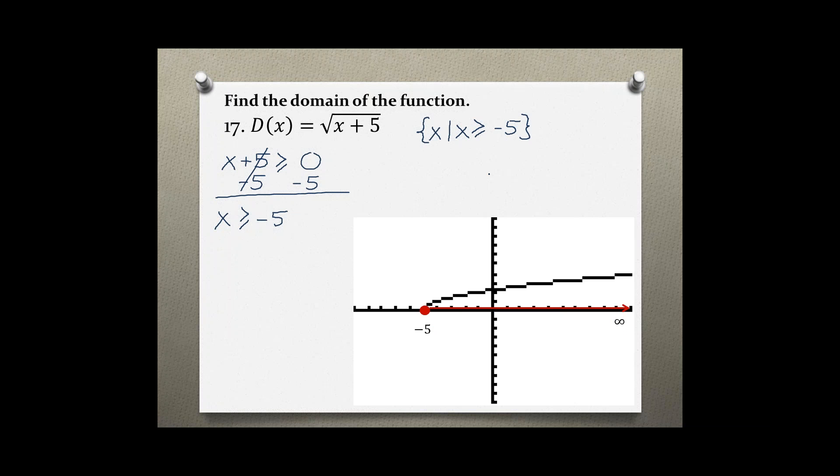When writing the domain in interval notation, we read the graph from the left. The x values start at negative 5, and since negative 5 is included, we use a bracket. Then the x values continue to positive infinity, which always gets parentheses: [-5, ∞).